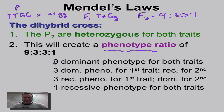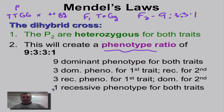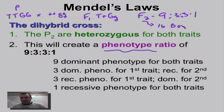Nine of them would show the dominant phenotype for both traits. Three would be dominant for one and recessive for the other. Another three would be the opposite — recessive for the first trait and dominant for the second. And finally, only one out of 16 would be recessive for both. So when you're doing your F2 cross, your Punnett square is going to have 16 boxes — and before you freak out and think that's too hard, it's really not.